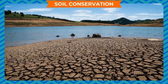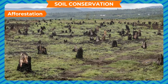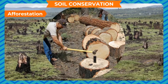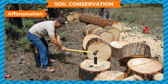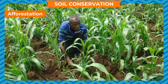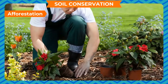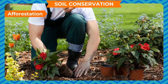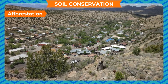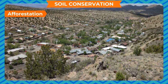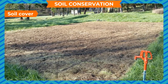We should discourage deforestation and instead plant many trees to conserve the soil. Planting of trees is called afforestation, and it is a very effective method of soil conservation. Afforestation is especially effective in hilly areas to prevent soil erosion.